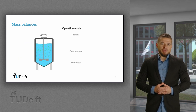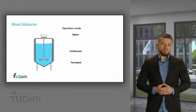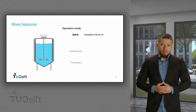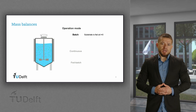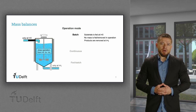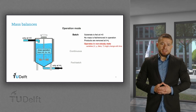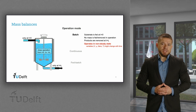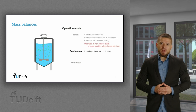Let's take a look at the three operation modes. In a batch system, the substrate is fed before the process starts. Then the closed operation takes place, and no mass is fed or removed during the process. Finally, the products are removed once the process is finished. This is a non-steady-state system, where process variables like volume, titers, or reaction rates can change during the process.